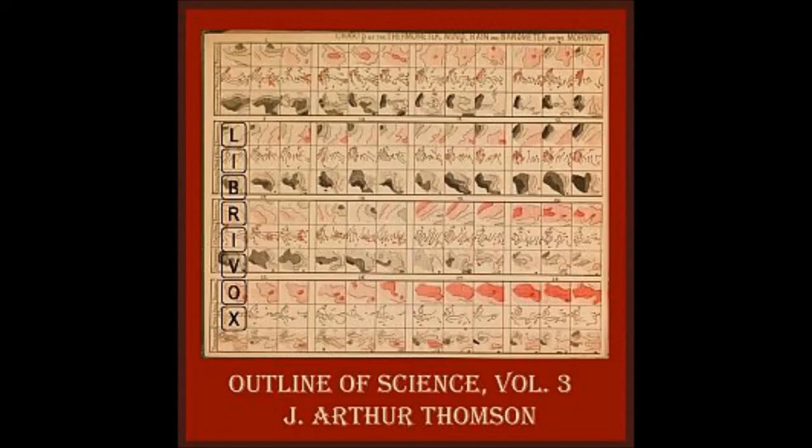Many naturalists have had the vision of the web of life, but none so vividly as Darwin. It was central in his picture of animate nature. By the web of life we mean that no creature lives or dies to itself, that each life is linked to other lives, often in obscure and unsuspected ways. Everything, as the philosopher Locke put it, is a retainer to other parts of the vast system of nature.